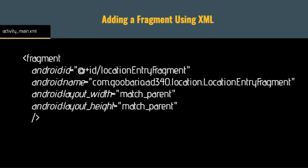To add a fragment to a screen, there are a couple of options. We can do it directly in XML: inside activity_main.xml, we add a fragment element, give it an ID, specify the name attribute pointing to the fragment class that should be instantiated, and give it a width and height. This would add a location entry fragment to our activity_main.xml file.